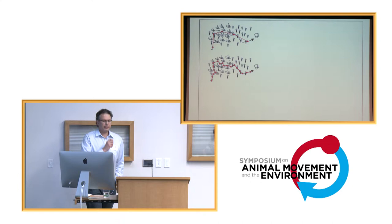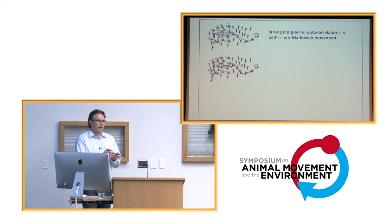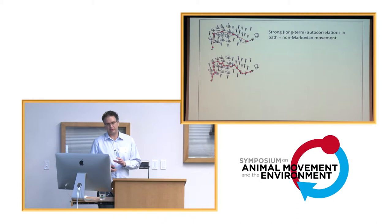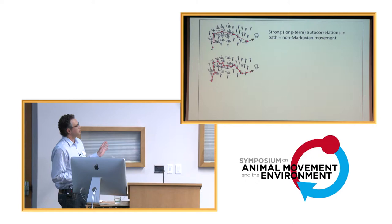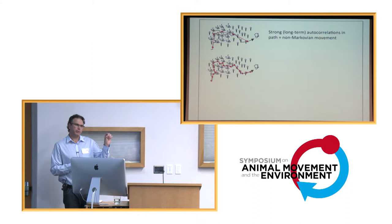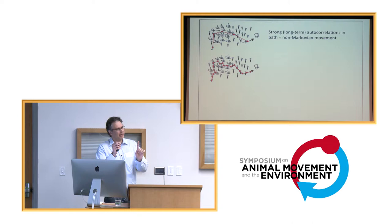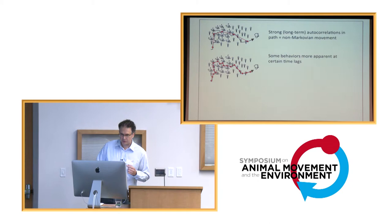The second problem with this approach that Paul didn't talk about is the inability to incorporate autocorrelations. So real movement data, unless you sample super coarsely, are almost always invariably going to have autocorrelations in them, sometimes operating on different timescales or over different distances. You have strong autocorrelations, persistent autocorrelations in your movement path. Your movement is essentially non-Markovian. You can no longer get away with this one step dependence. Instead, your next movement step or your next move depends on the entire history of where you've been before, weighted possibly by how strongly correlated it is with that.